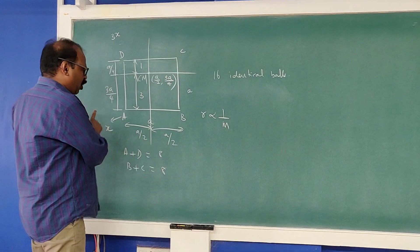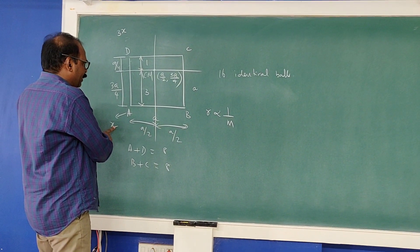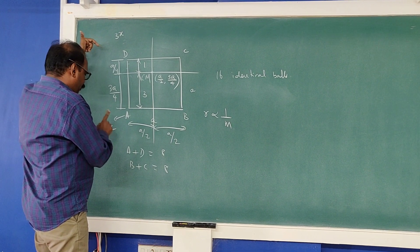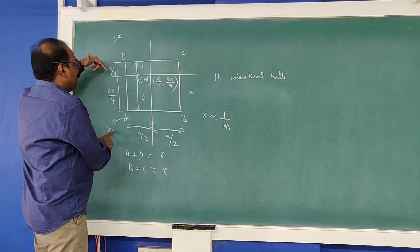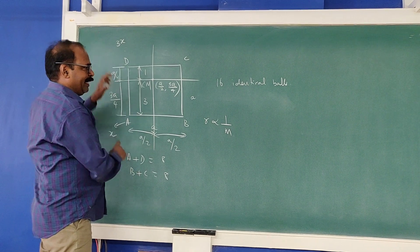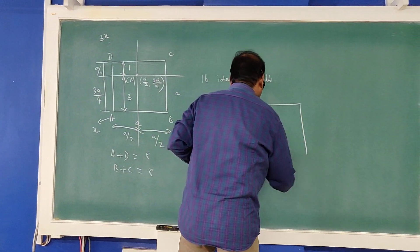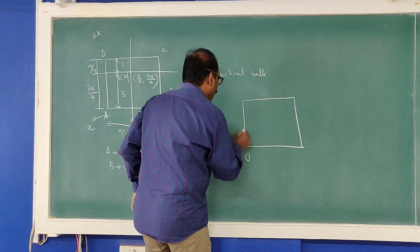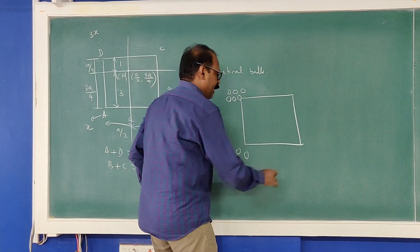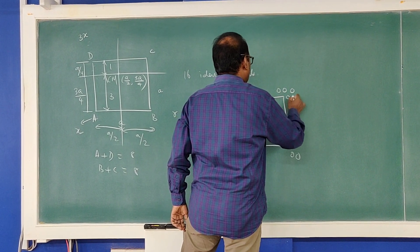Totally you have 8 balls on that side. If you put 1 here, there will be 3 here — total becomes 4. If you put 2 here, there will be 6 here — total becomes 8. That is the correct answer. So what you should do is: here 2 balls, here 6 balls, here 2 balls, here 6 balls. That is all. The center of mass will come at (A/2, 3A/4).